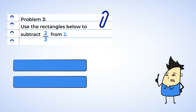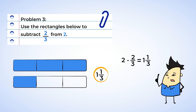Use the rectangles below to subtract two-thirds from two. We need to subtract two-thirds from two wholes. First, we're going to need to separate the wholes into thirds by making three equal parts. Now we will subtract two-thirds by taking away or unshading two sections. We're left with one whole rectangle and one rectangle with only one-third shaded. This means that we now have one and one-third. When we subtract two-thirds from two, we have one and one-third left.